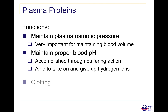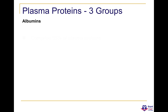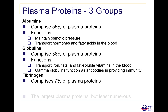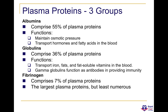Plasma proteins have several functions: they maintain osmotic pressure, maintain blood pH, and are involved in clotting and immunity. They come in three groups: albumins comprise 55% of plasma proteins and maintain osmotic pressure; globulins comprise 36% and transport ions, fats, and fat-soluble vitamins — gamma globulins function as antibodies (IgG, IgA, IgE); and fibrinogen comprises 7% and is used in the platelet clotting function.